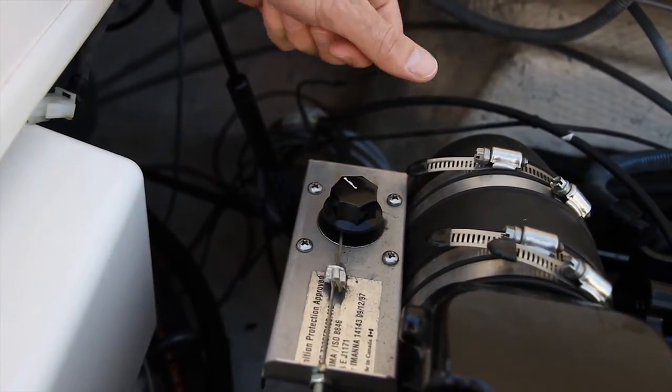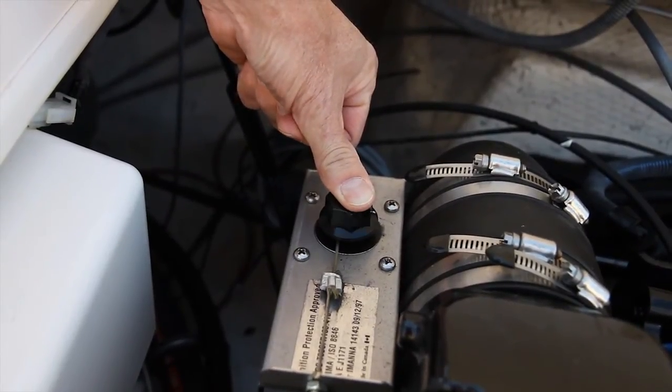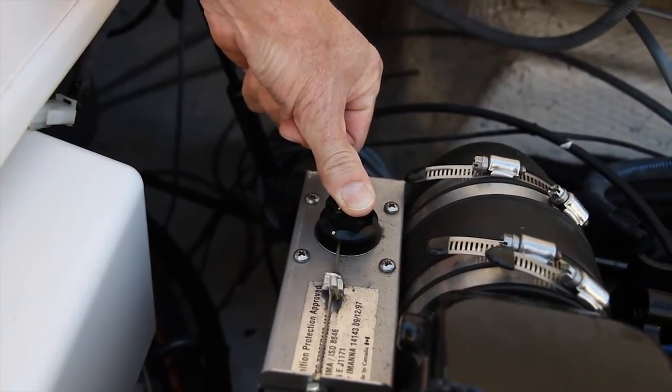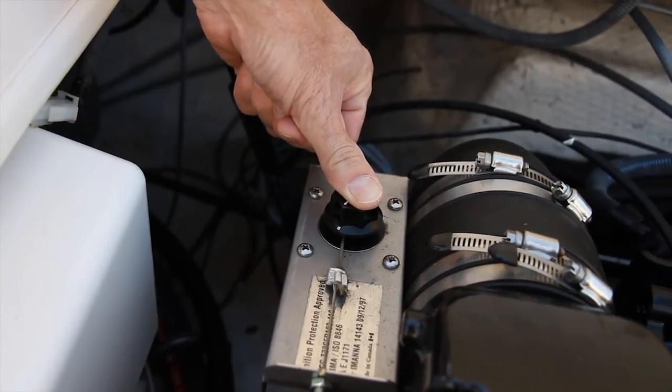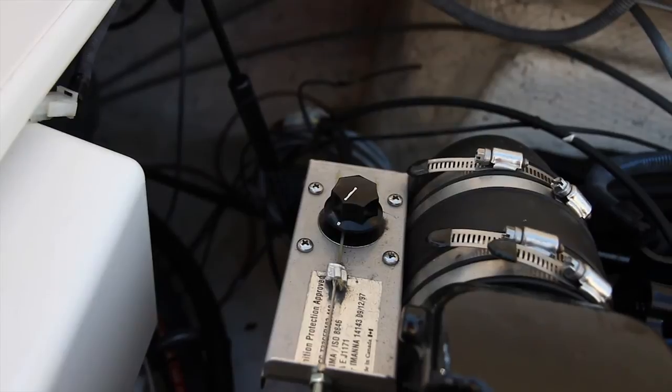Except this time put your thumb on the knob to make it work a little bit harder. And as you can see the knob could easily overpower the pressure from my thumb, which indicates this servomotor is in perfect working order.